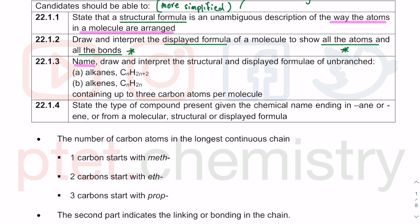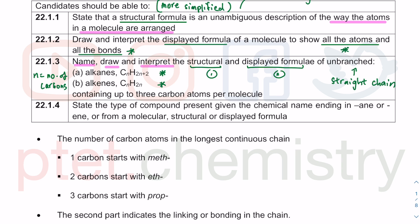We need to name, draw, and interpret both the structural formula and the display formula of unbranched compounds. Unbranched means straight chain — they don't branch out. These are alkanes, where n equals the number of carbon atoms. When you have alkanes, you have the general formula CnH2n+2. This is a very important general formula.